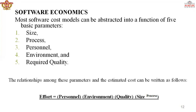The relationship between these parameters and estimated cost can be written as: Effort = Personnel × Environment × Quality × Size^Process. This is the relationship between the five parameters when evaluating software economics.